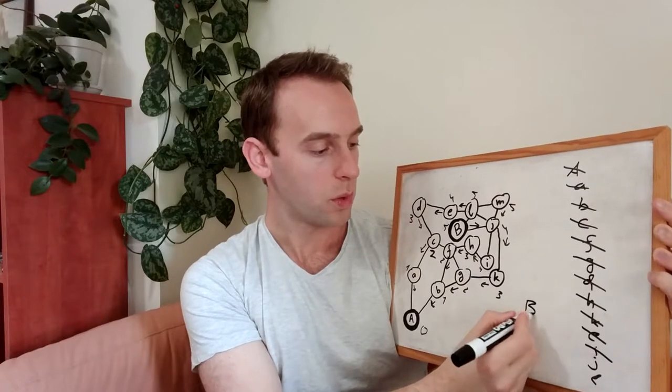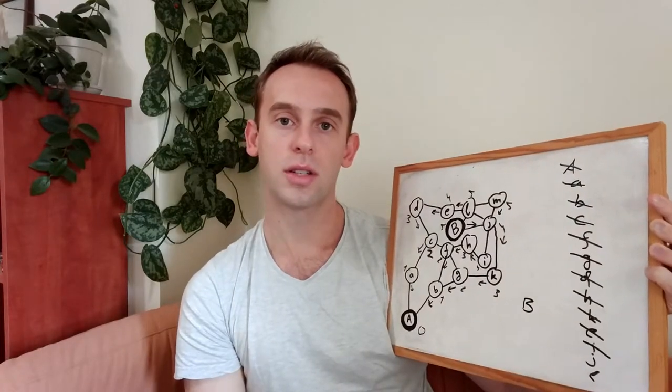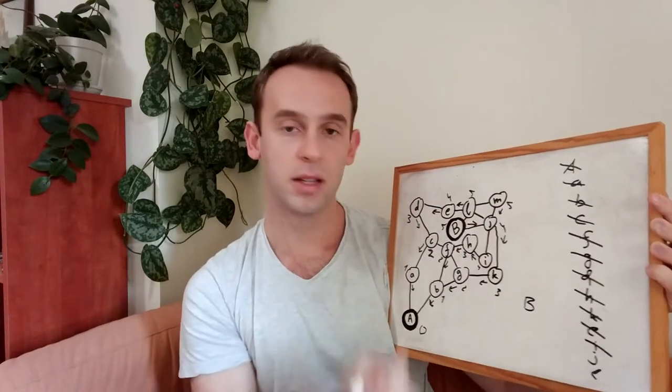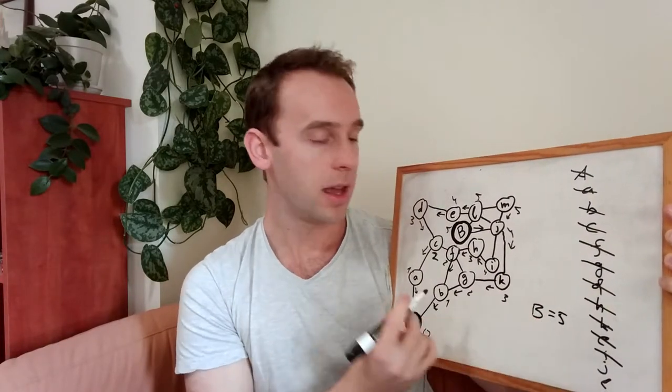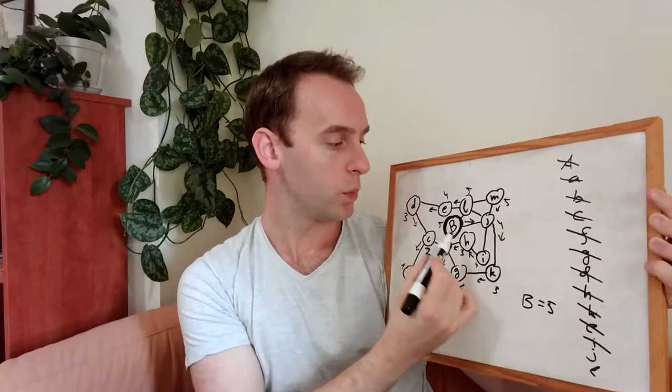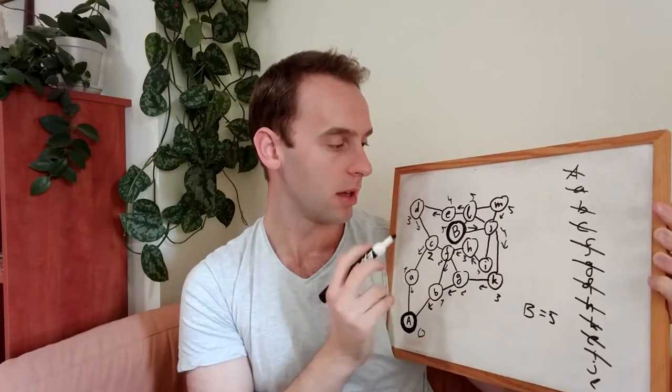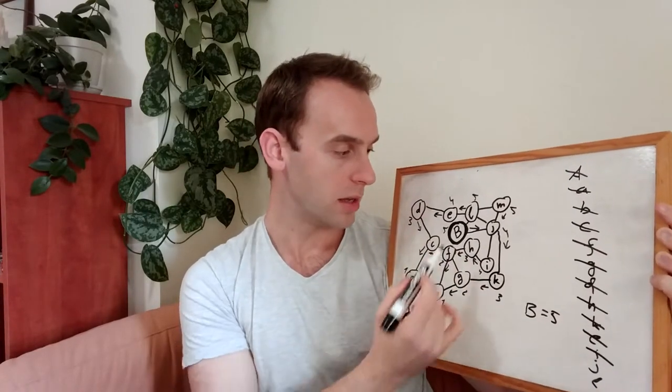Now we already know the shortest distance from A to B is five. And how to find the path? Well, we simply need to go through the arrows from B to A.